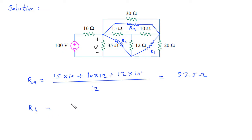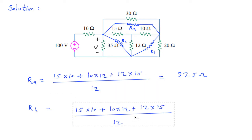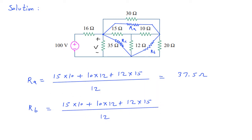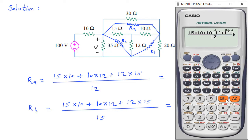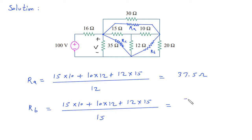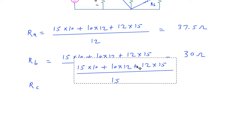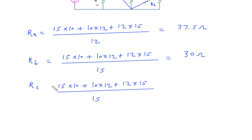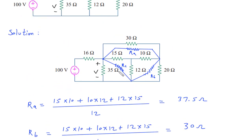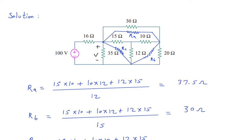Then to find Rb: the same numerator divided by 15 Ohm. So this will be 30 Ohm.